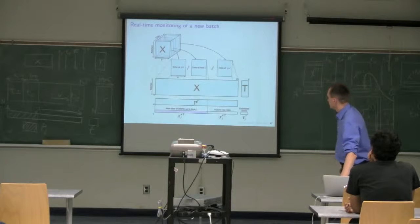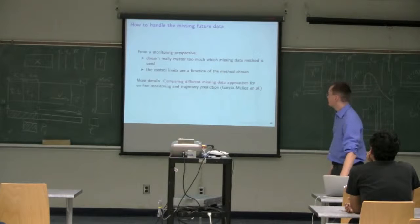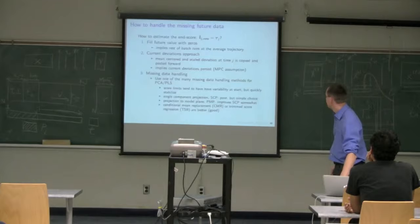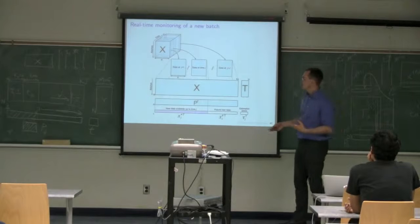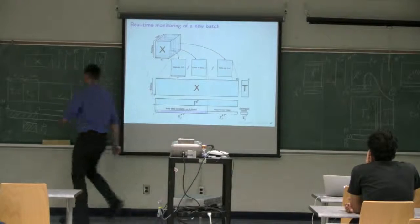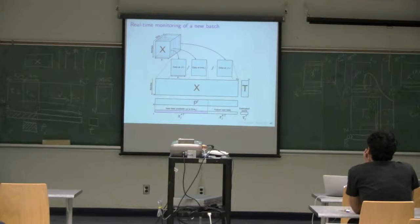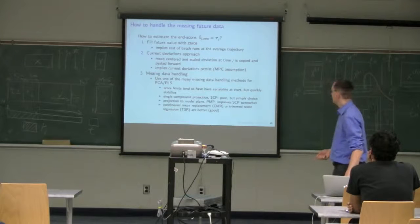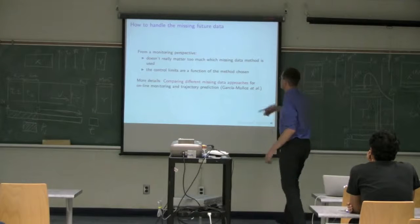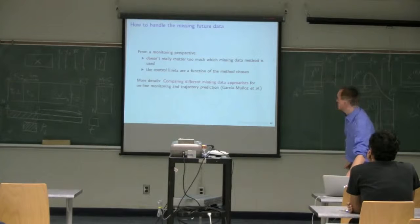There are many different ways of predicting the final score tau. I've listed at least five options here. There's a good paper by Salvador Garcia Munoz, who now works for Pfizer, comparing missing data approaches for predicting trajectories as the batch evolves, with comparisons of the different methods.